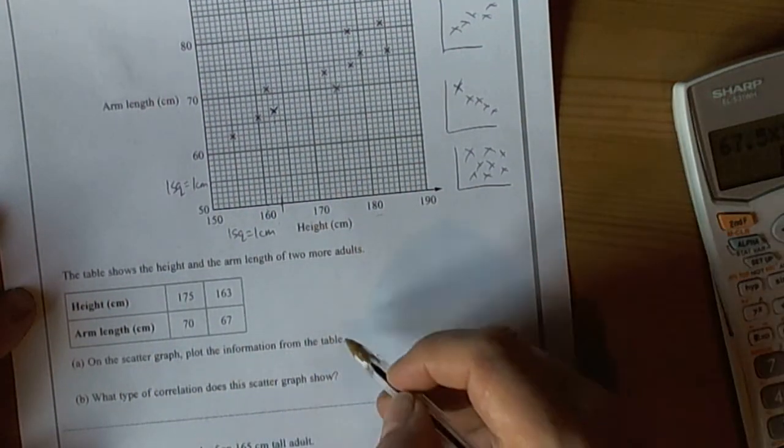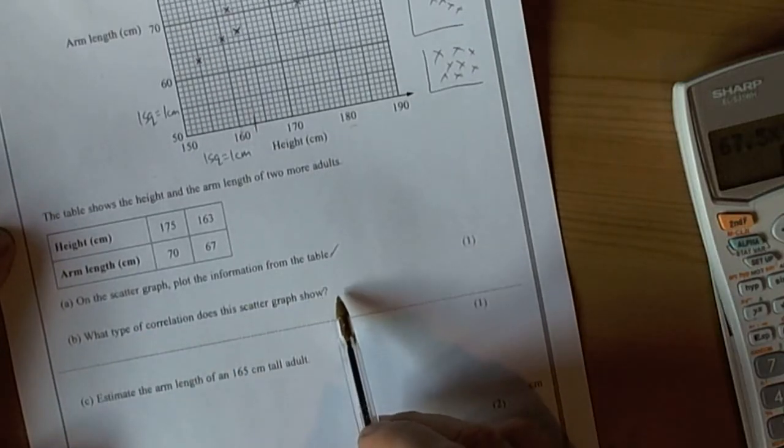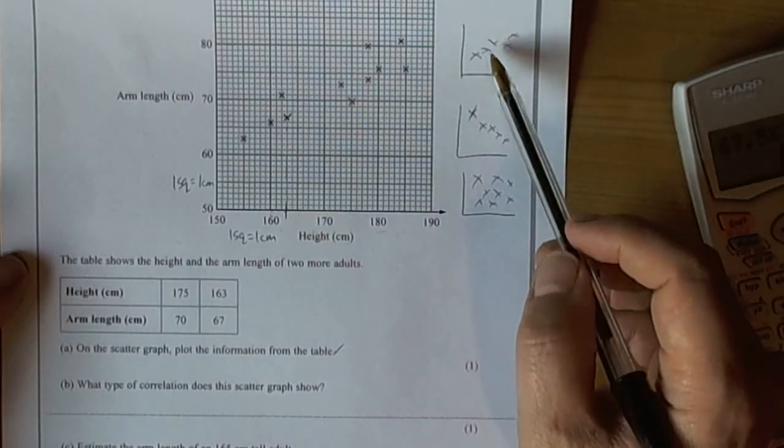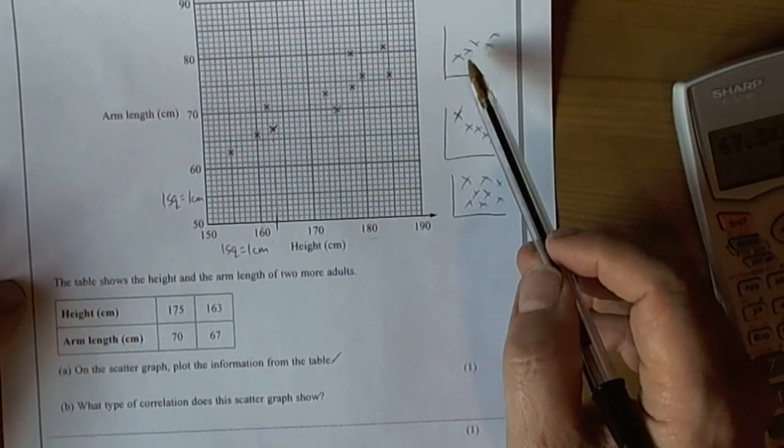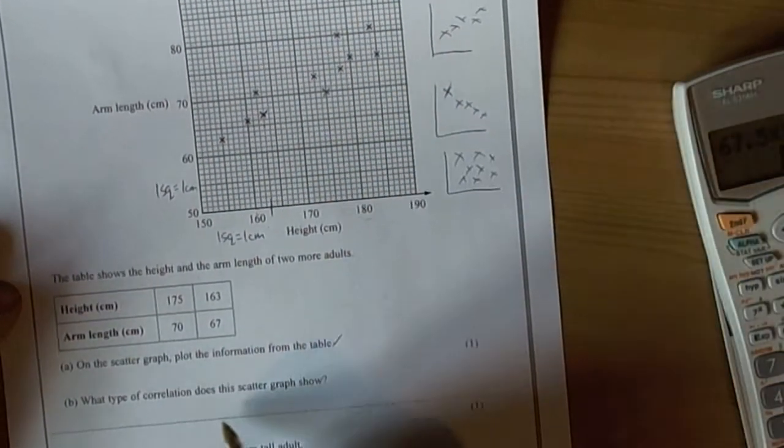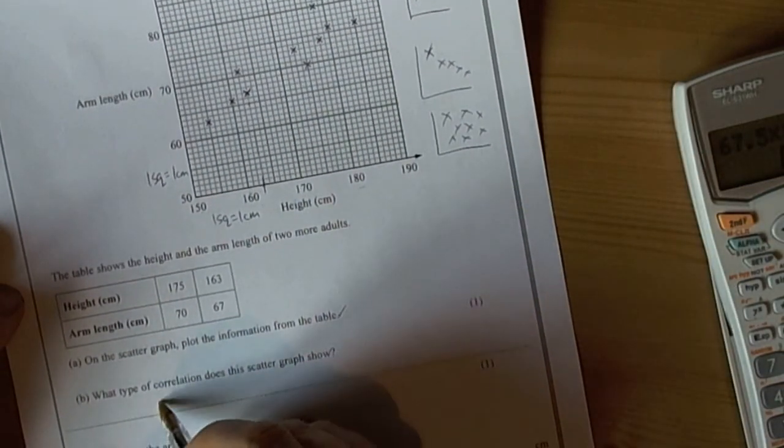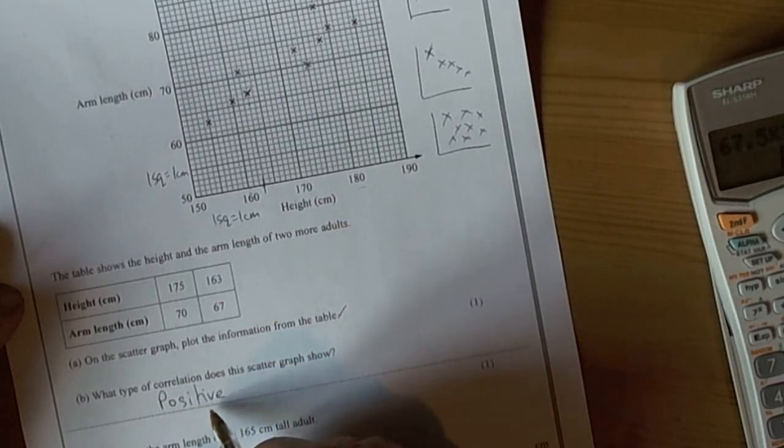So on the scatter graph plot the information, so we've done that bit. It then says what type of correlation does this scatter graph show? Well there are three main types of correlation that you're expected to know at GCSE. This one generally looks so as the height increases the arm length increases. So that would be positive correlation. So looking at spelling carefully. So this is positive.